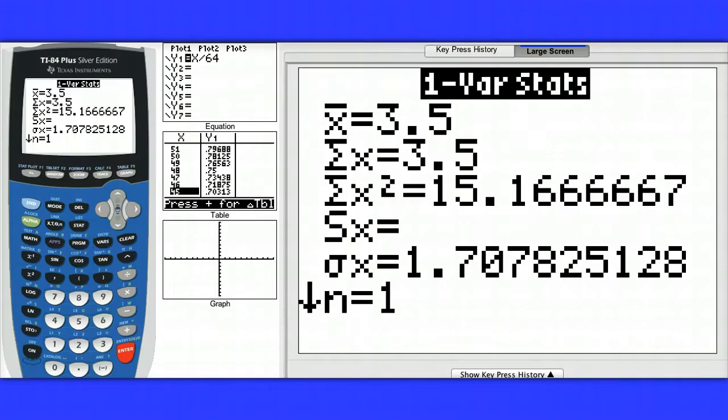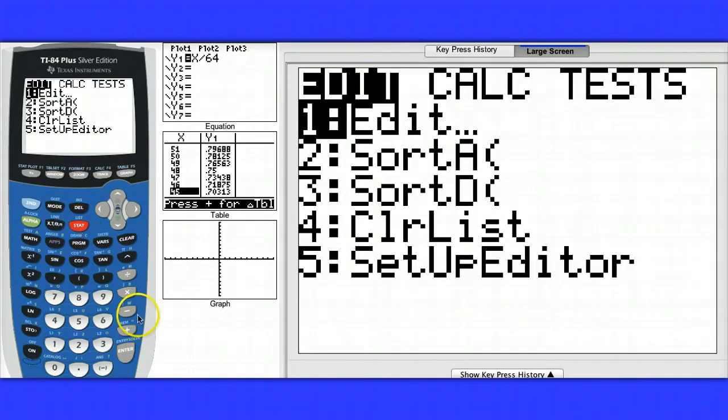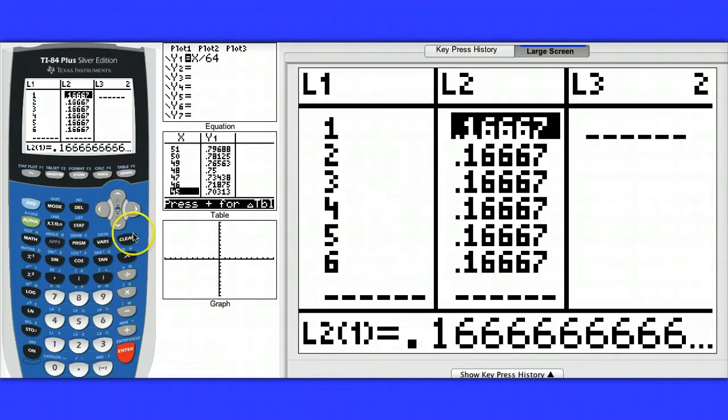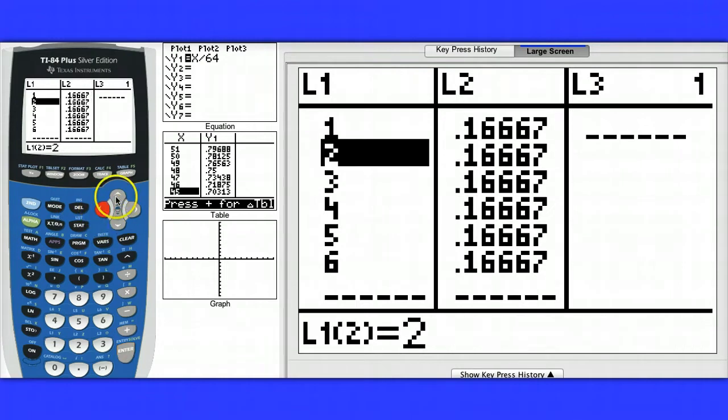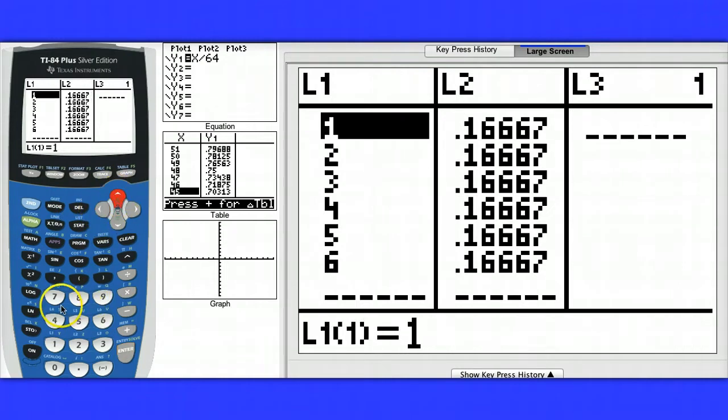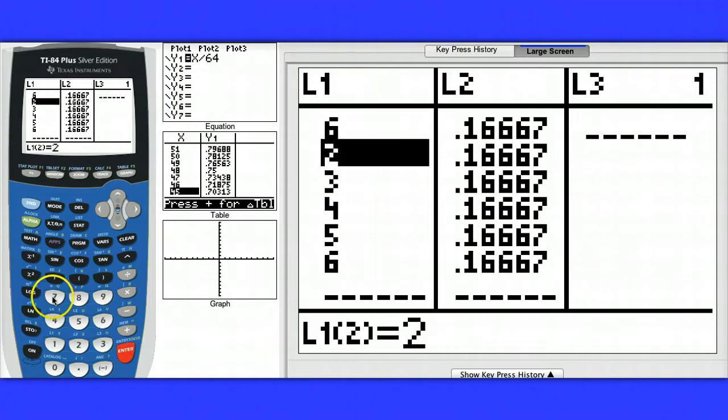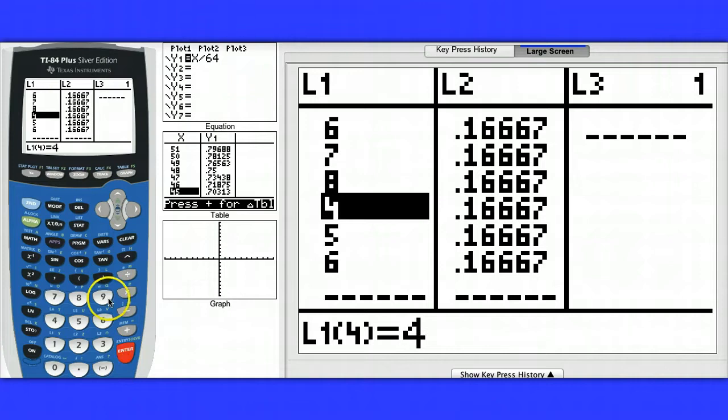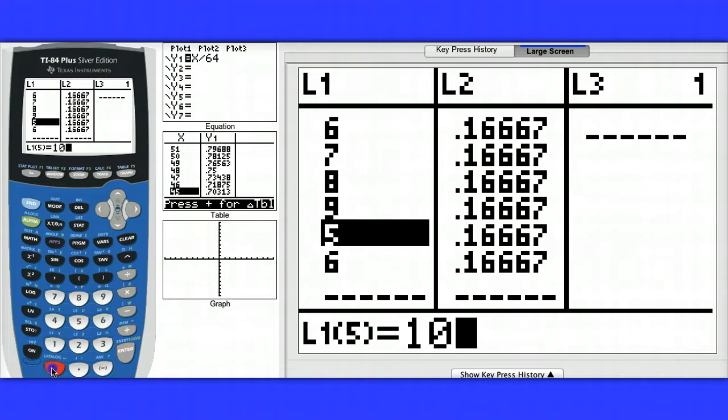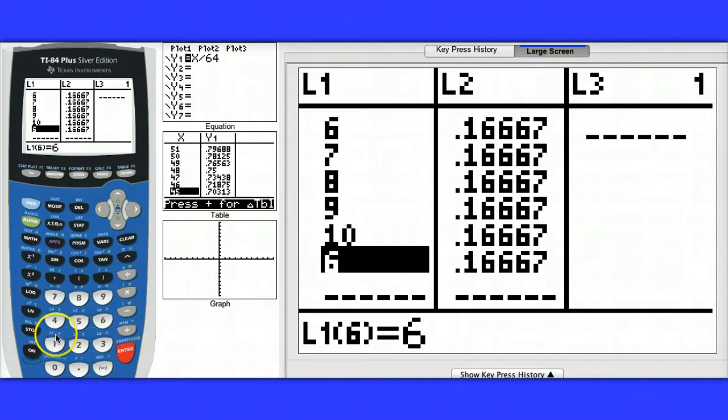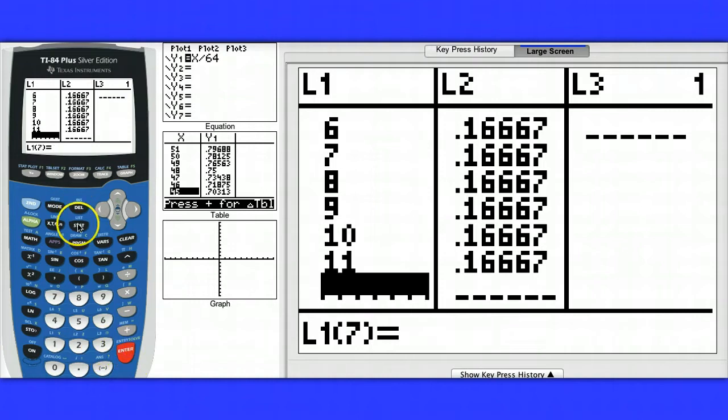We're going to add 5 to every value of the random variable. So we have 6, and then 7, and so on, 8, 9, 10, and 11. All right, let's calculate the mean and standard deviation.